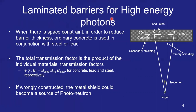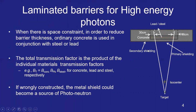We will look at laminated barriers for high energy photons. When space becomes a constraint, in order to reduce the actual barrier thickness, one can use metals like steel or lead within the regular concrete. In such cases, the total transmission factor is the product of the individual material transmission factors. So the total transmission B_T equals B_concrete multiplied by B_lead multiplied by B_steel if steel is also present.